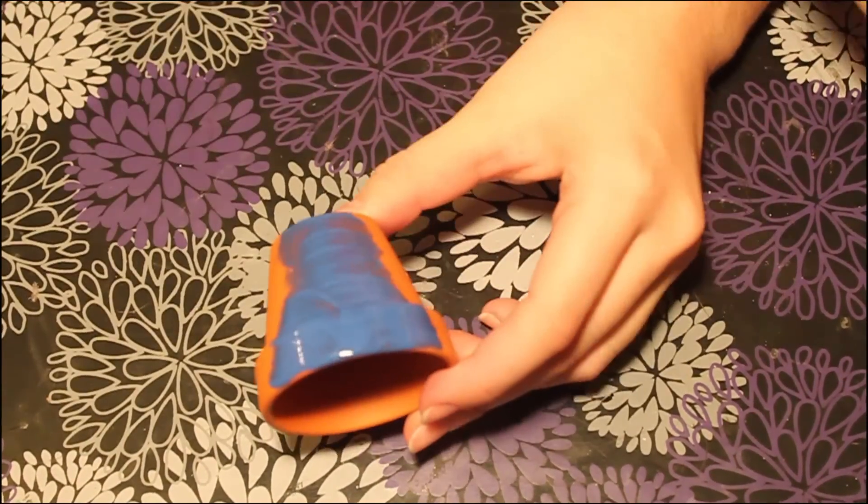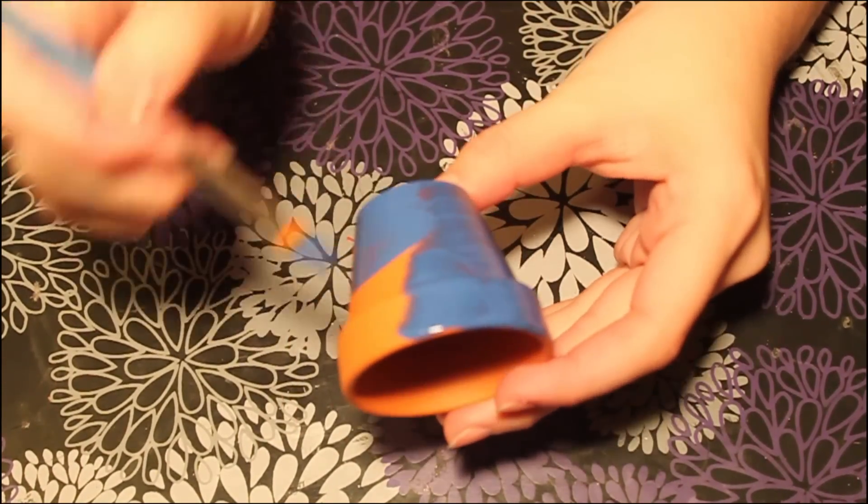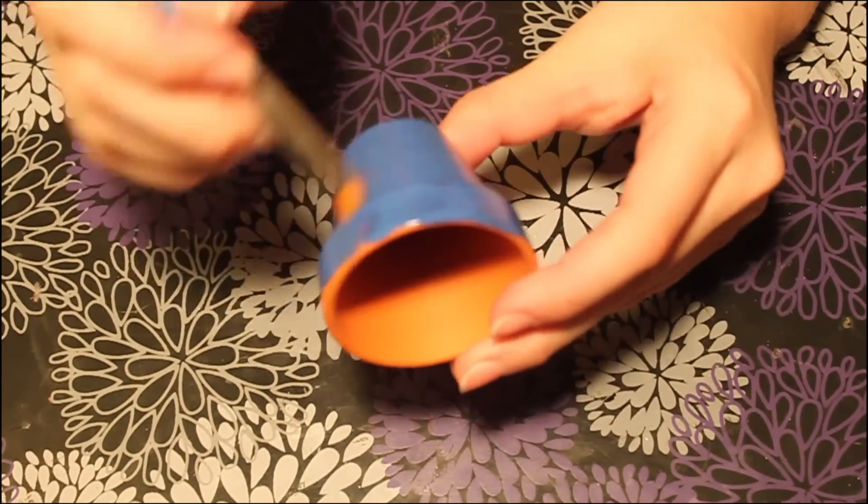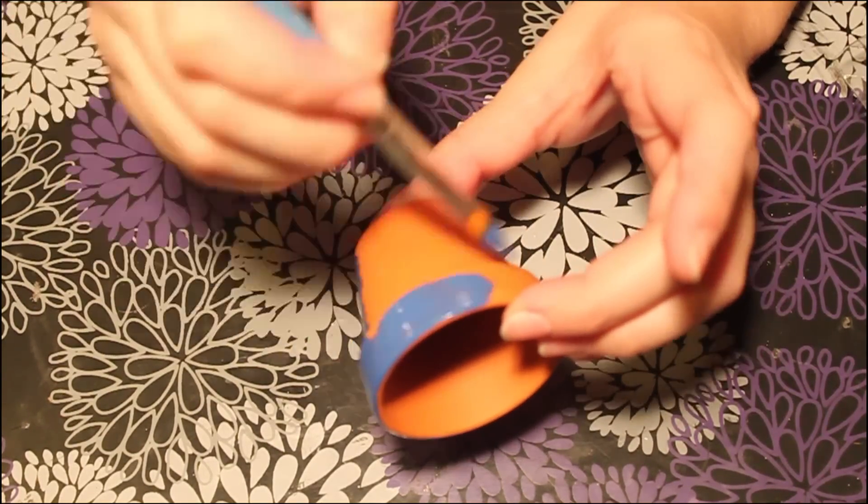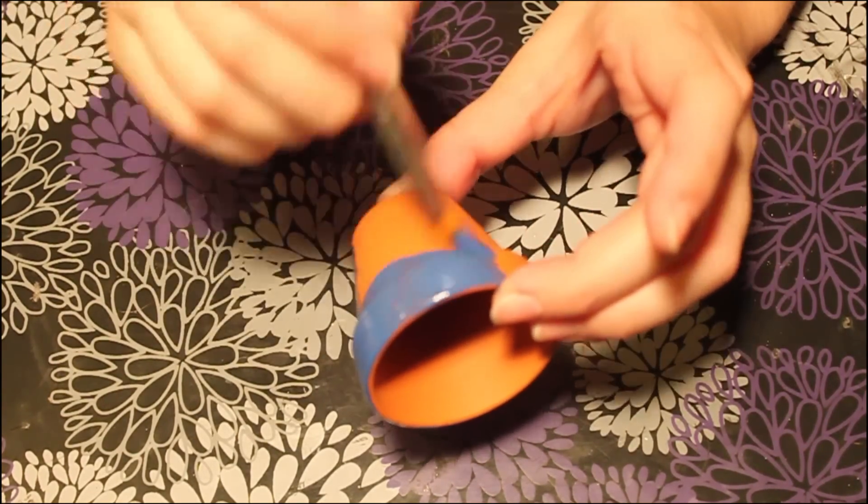So go ahead and bake that in the oven at 275 and grab your little plant pot and start painting it. You're going to need to do two layers on this. So here's layer one.